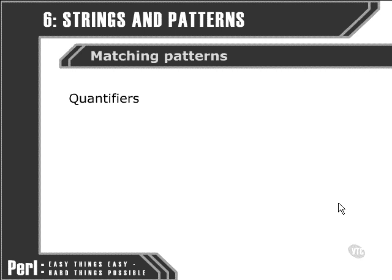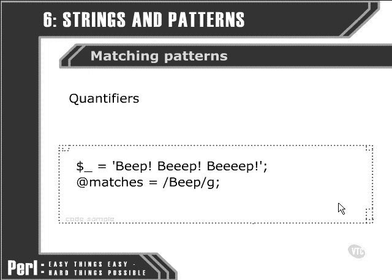Let's take a look at an example. Here, we're taking the larger string: 'beep', and 'beep', and 'beep', spelled with various numbers of E's, and we're asking Perl to look for any instances of this pattern — 'beep' with only two E's. If we run this little script, Perl will only find one match in the string. The problem is, of course, that we're very literally specifying the number of E's that we expect to find.